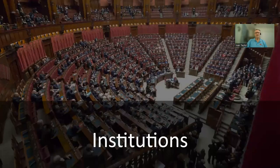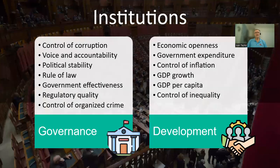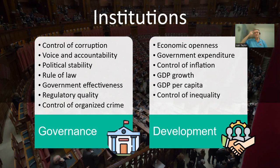There were two types of institutions. Under governance institutions, there was control of corruption, voice and accountability, political stability, rule of law, government effectiveness, regulatory quality, and control of organized crime. Under development institutions, there was economic openness, government expenditure, control of inflation, GDP growth, GDP per capita, and control of inequality.